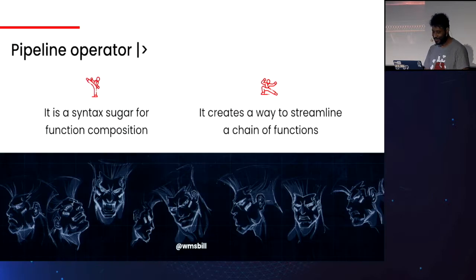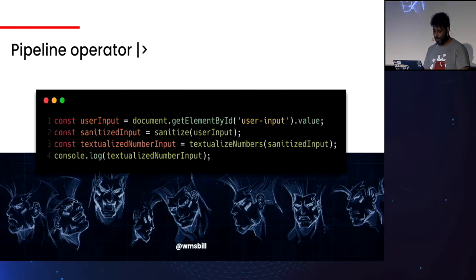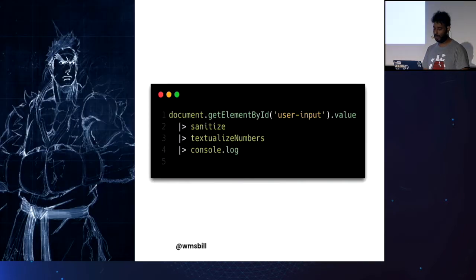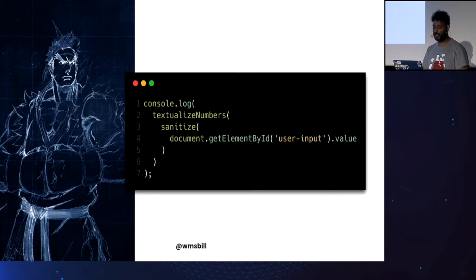The answer is the Pipeline Operator. The pipeline operator is a syntax trigger for this use case — it creates a way to streamline a chain of functions in a readable and functional manner. It's backwards-compatible and provides an alternative to extending built-in prototypes. That previous example using the pipeline operator would look like this, and the way the data flows is the same way you read the code.